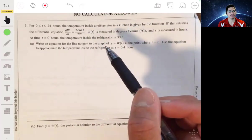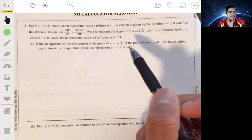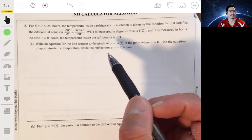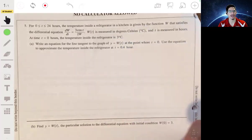Write an equation for the line tangent to the graph of Y equals W of T at the point where T equals 0. Use the equation to approximate the temperature inside the refrigerator at T equals 0.4 hour.